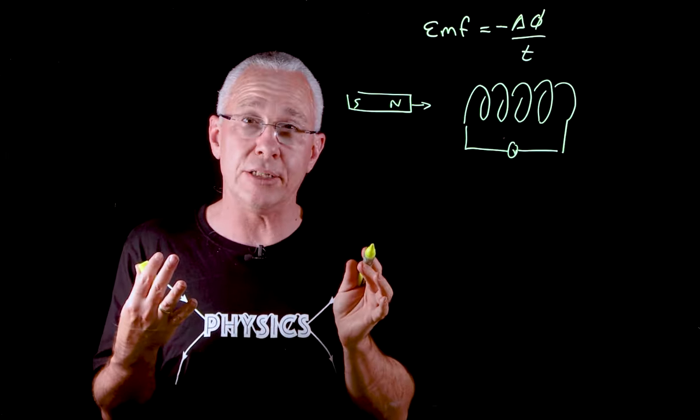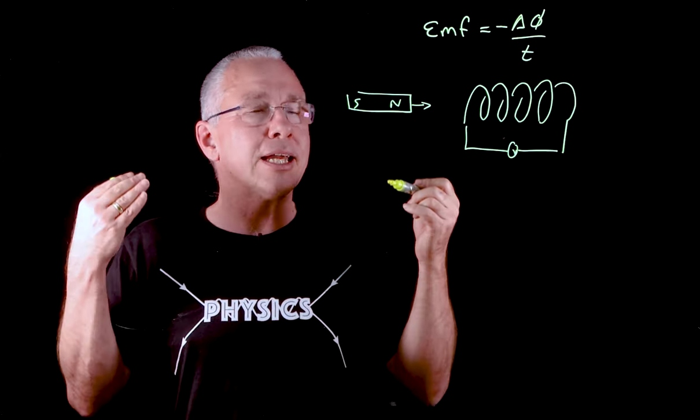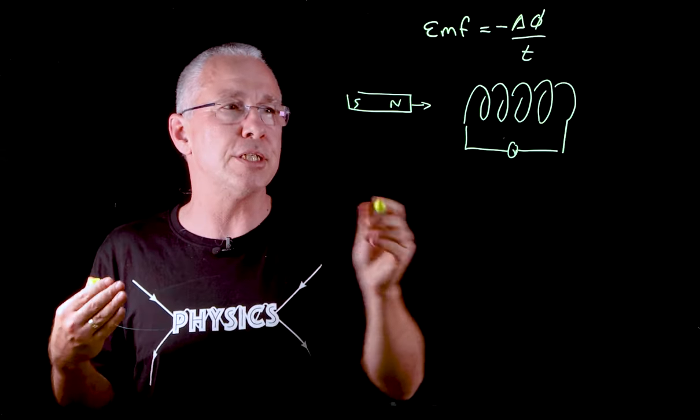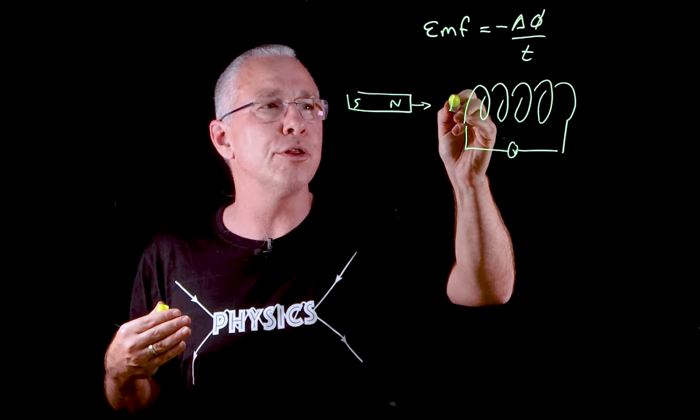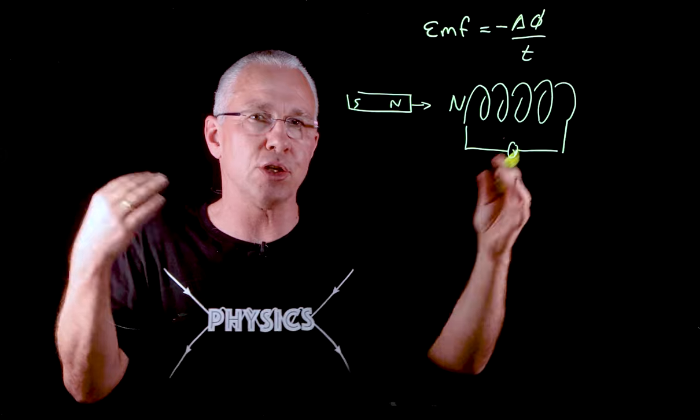As a result, a current is produced. The current that is produced will always produce a magnetic field that opposes it. So as I push this in, I am going to produce a north pole in this end. It's not going to want to go in - it's going to experience a force of repulsion.